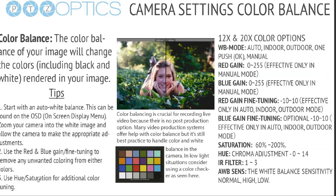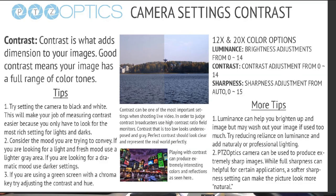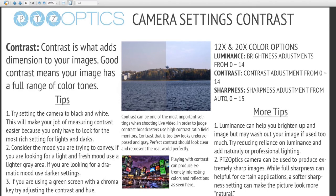You can use red and blue gain to fine-tune and remove unwanted colors, and you can also use hue and saturation — which is really effective for getting a green screen just perfect. Color balancing is crucial for recording live video because there is no post-production option. Many video production systems offer help with color balance, but it's still best practice to handle all your color including white balance in the camera. You can also consider using a color checker to make sure everything is represented properly.